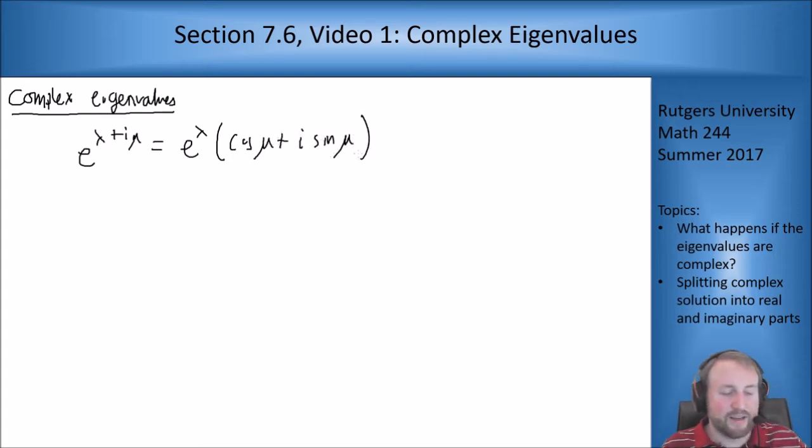Let's go ahead and jump right into it. So in the case of complex eigenvalues the idea is pretty much the same as we had for chapter 3. The idea is we use the fact that if I have e to the lambda plus i mu I can write this as e to the lambda times cosine of mu plus i sine of mu and use that to get me real and imaginary parts to my solution and put them together to get an actual solution.